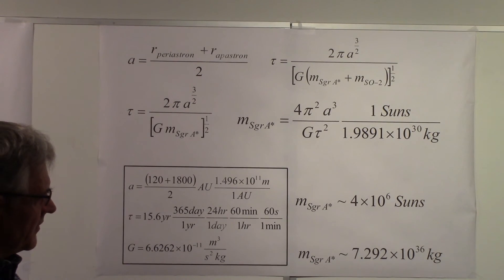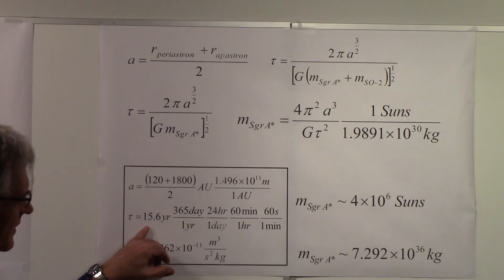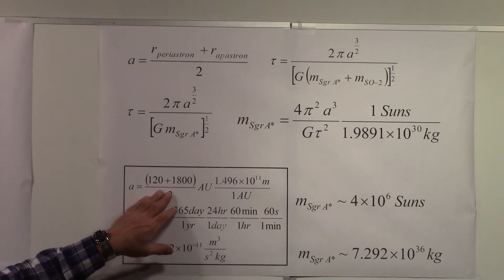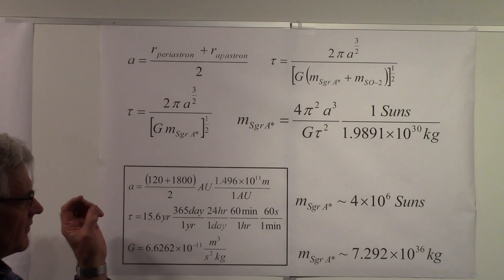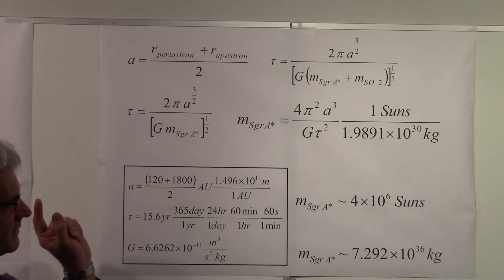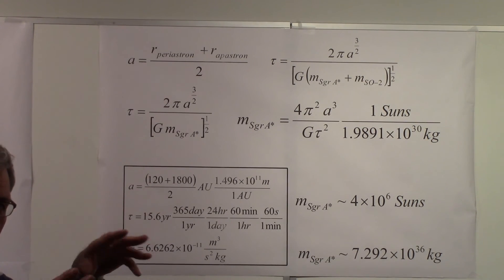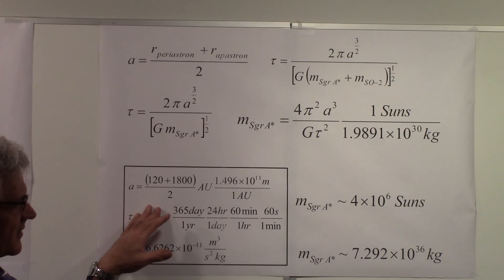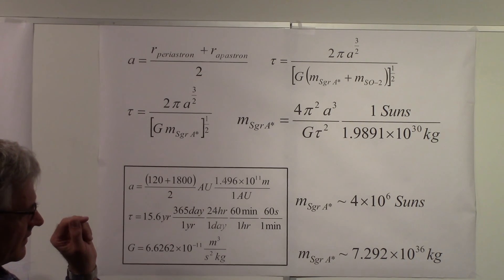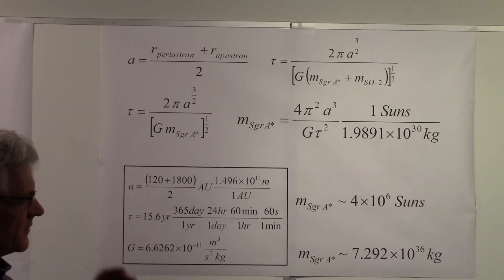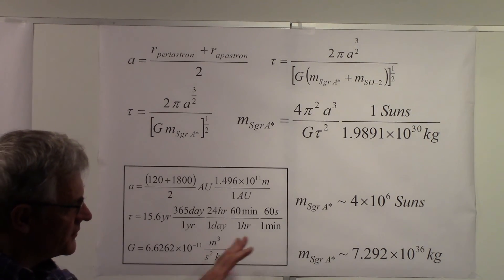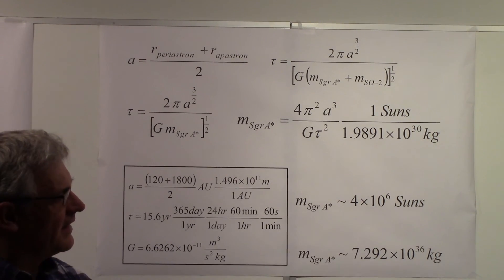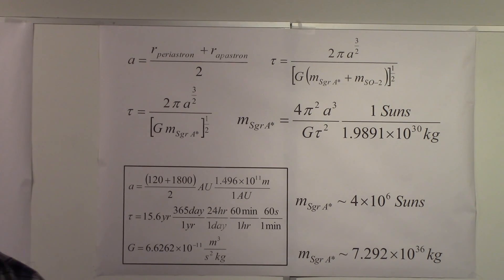Based on the period of 15.6 years and the orbit size that can be seen from Earth through very sophisticated telescopes that use adaptive optics to correct for atmospheric problems, these are the numbers for the closest point and the far point. With those numbers, we come up with an estimate for the mass of Sagittarius A*, the supermassive black hole at the center of the Milky Way, roughly 4 million suns.